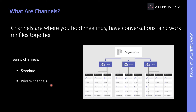Private channels enable private collaboration within a project and department. Please note that private channels currently support only connectors and tabs, but without Stream, Planner, or Forms tabs, and they do not support messaging extensions and bots. This picture shows the structure of channels in Teams of an organization.